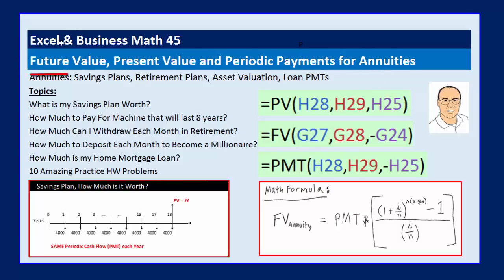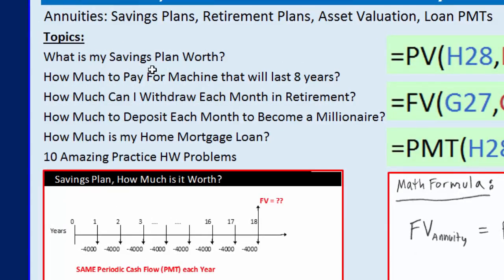The last few videos, we did calculate future value and present value, but it was for a lump sum. Once we learn the formulas and Excel functions for annuities, it opens up all sorts of amazing possibilities. We can answer financial questions like: What is my savings plan worth? How much to pay for a machine that will last eight years? How much can I withdraw each month in retirement? How much to deposit each month to become a millionaire? Or how much is my home mortgage loan?